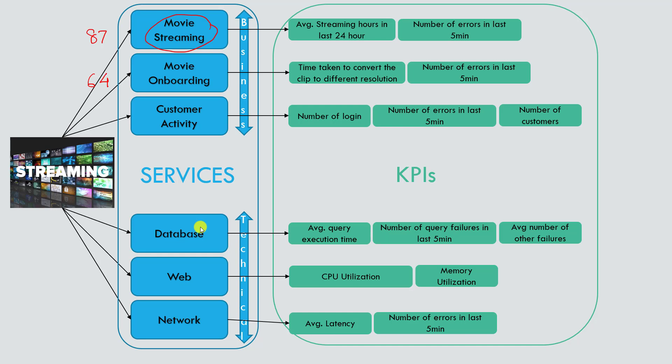The threshold can be set manually or through machine learning — this is called adaptive thresholding, which we'll cover in later videos. Based on the health values of the KPIs, the overall service health score is determined, and you can set alerts to trigger actions accordingly.